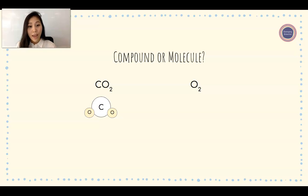We can identify carbon dioxide as a compound. In oxygen, we have one oxygen atom bonded to another oxygen atom, and these two are both the same element, so in this case it wouldn't be a compound, but oxygen would be a molecule.